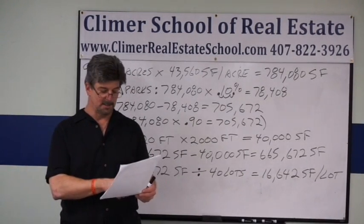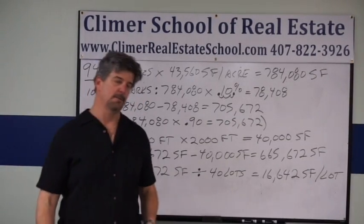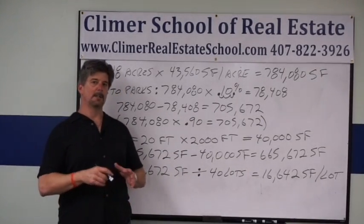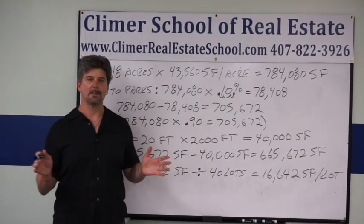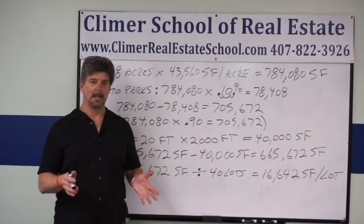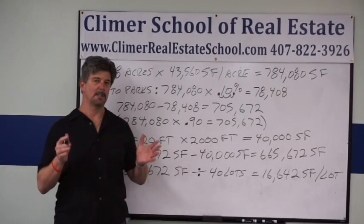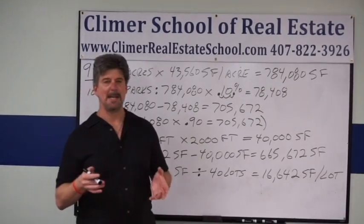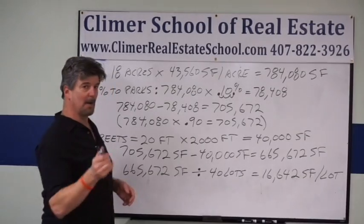Well, first of all, the answer is D, 16,642 square feet. Let's talk about this for a second. We have a big piece of land. We're going to take out a certain amount for the parks. We're going to take out a certain amount for the street, and then we're going to divide through by the number of lots. It's really just multiplication, division, addition, subtraction. I tell this to my students all the time. It's not so much the math as it is seeing how these numbers and concepts work together. So let me show you how I did it.